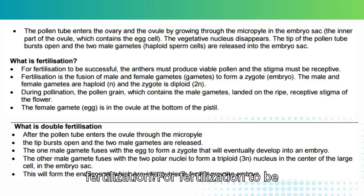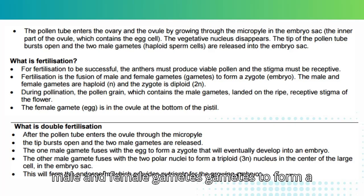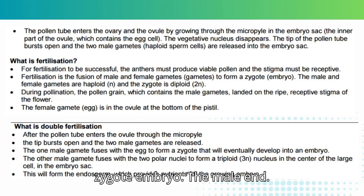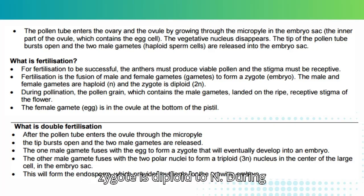What is fertilization? For fertilization to be successful, the anthers must produce viable pollen and the stigma must be receptive. Fertilization is the fusion of male and female gametes to form a zygote embryo. The male and female gametes are haploid (N) and the zygote is diploid (2N).